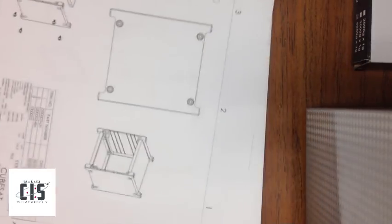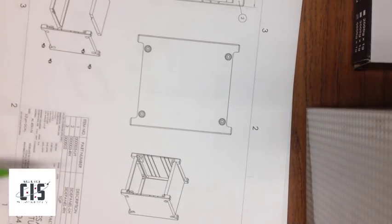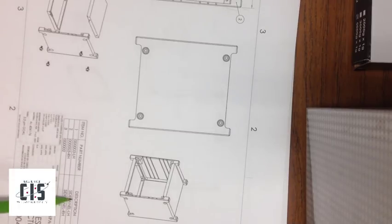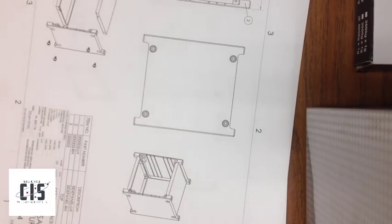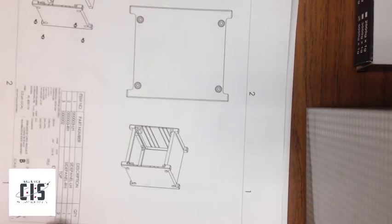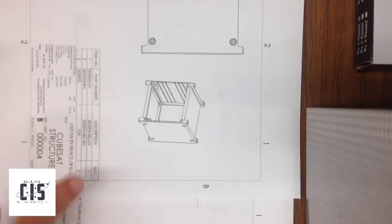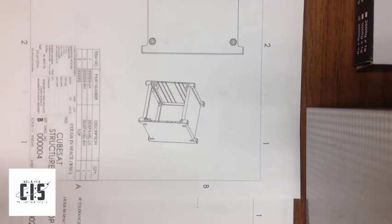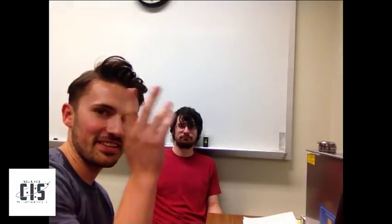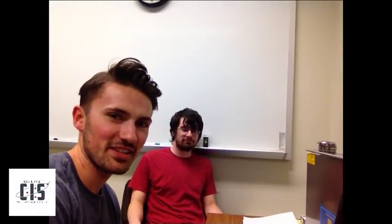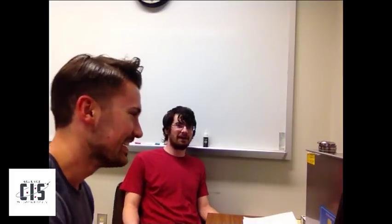The last thing is for assembly drawings: make sure to include the parts list — part names, part numbers, and the quantity. That's pretty much all you have to do with that. You can see here: left hand, right hand, and then two tops because one's top and one's bottom.